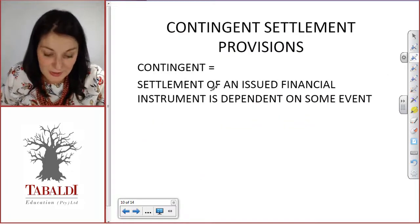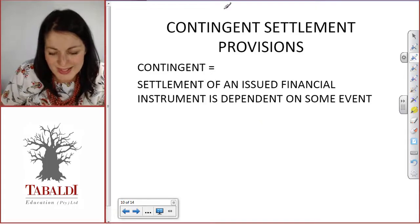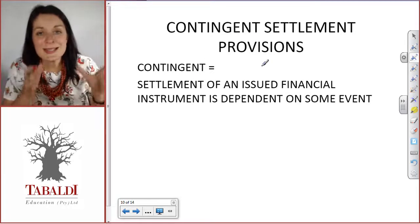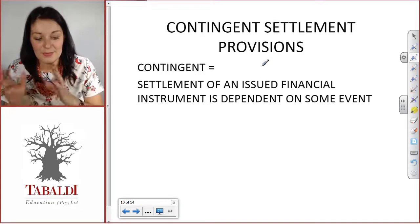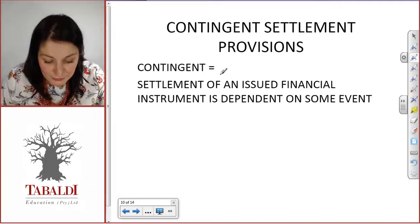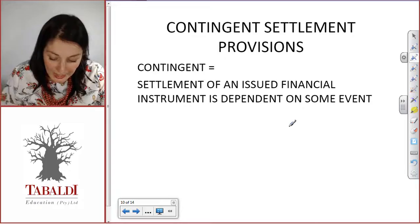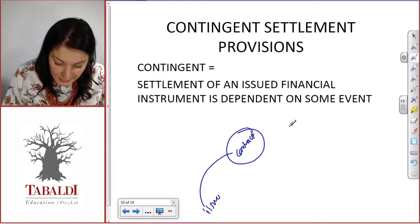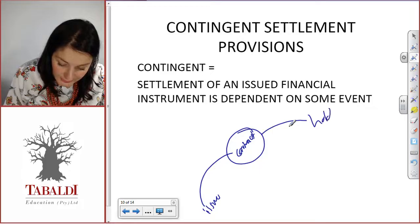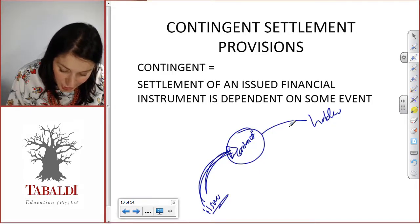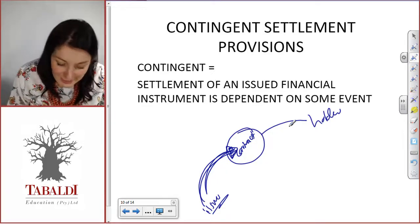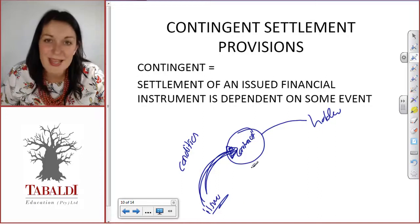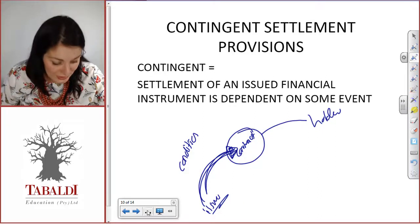The third issue is the contingent settlement provision. This means there's some contingency attached to the contract — we will only settle if something happens. The settlement of an issued financial instrument is dependent on some event. So there's a contract, an issuer and a holder, and the issuer will only deliver or make payment in terms of this contract if some condition or contingency is met. The question is: in cases like this, are we dealing with a financial liability or an equity instrument?